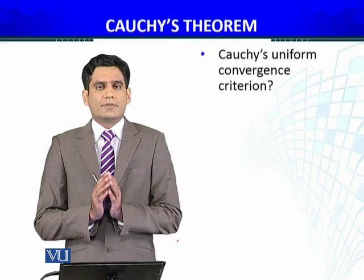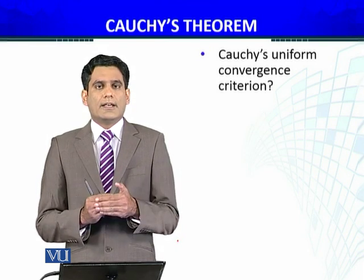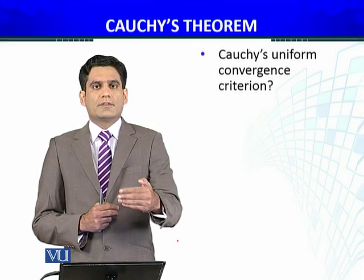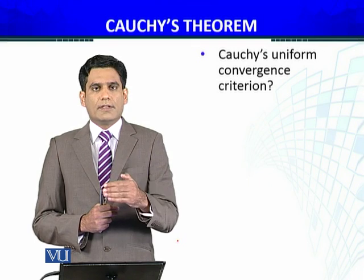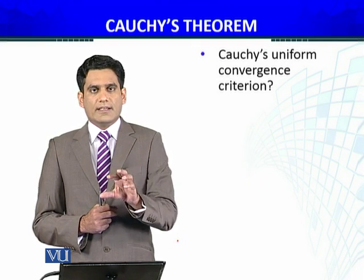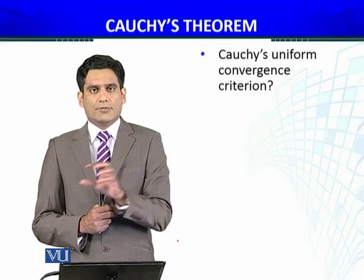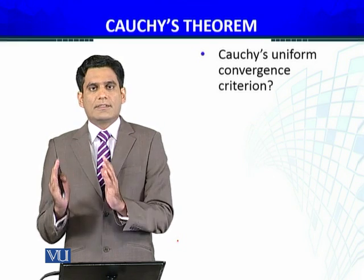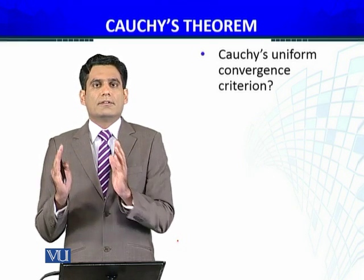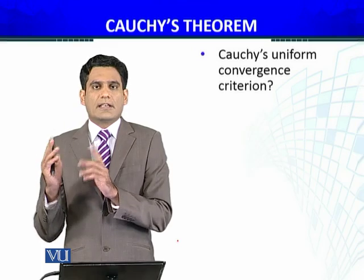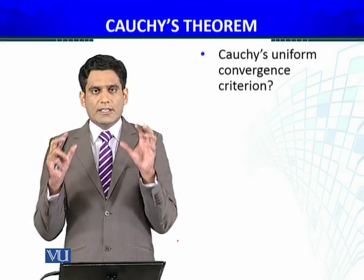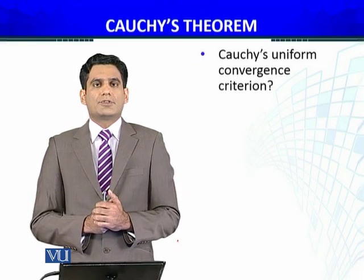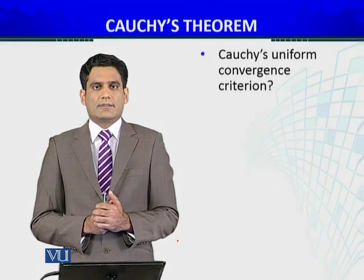So we have proved Cauchy's criterion for uniform convergence of sequences of functions — the if and only if condition। If a sequence of functions is uniformly convergent on S, then it satisfies the Cauchy inequality: ‖f_m − f_n‖_S < epsilon whenever m and n are greater than N। Conversely, if this inequality is true, then the sequence of functions converges uniformly on the set S।